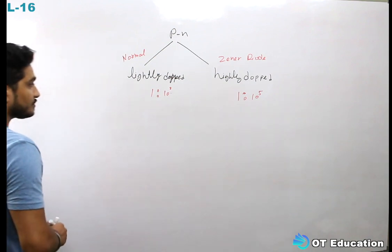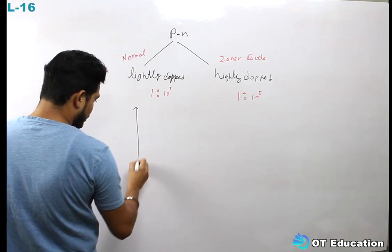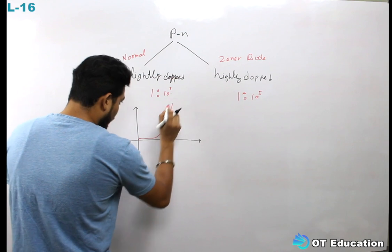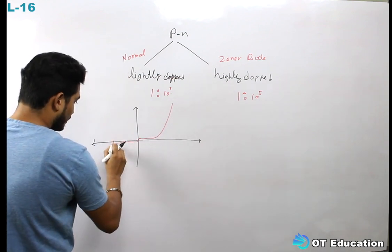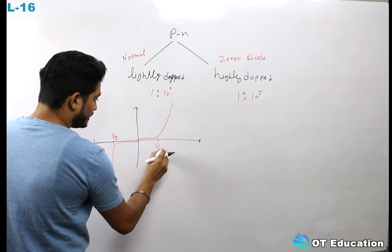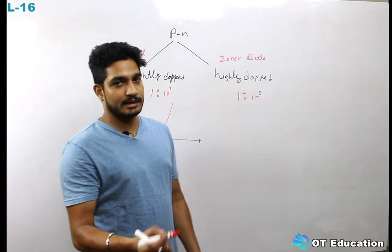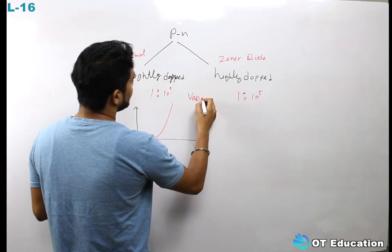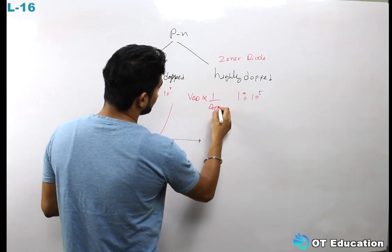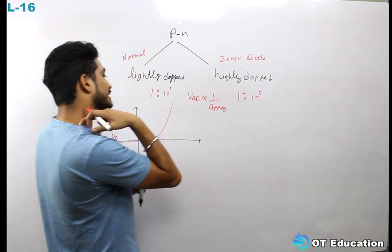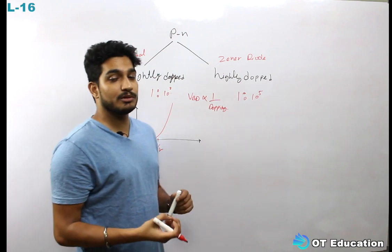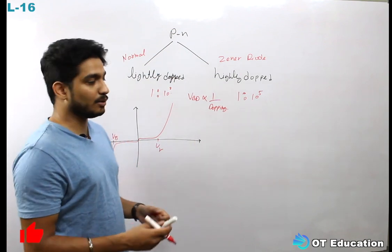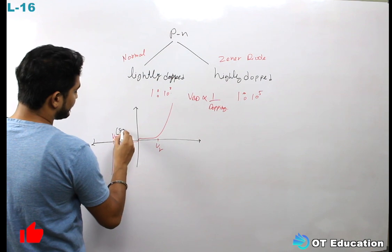So I will discuss that. If I talk about the normal diode characteristics — this is VBD and this is V-gamma. The reverse breakdown voltage is inversely proportional to doping. That means less doping leads to a higher VBD — a higher reverse breakdown voltage. The normal diode is lightly doped, so the breakdown voltage will be more, in the range of 50 to 100 volts.